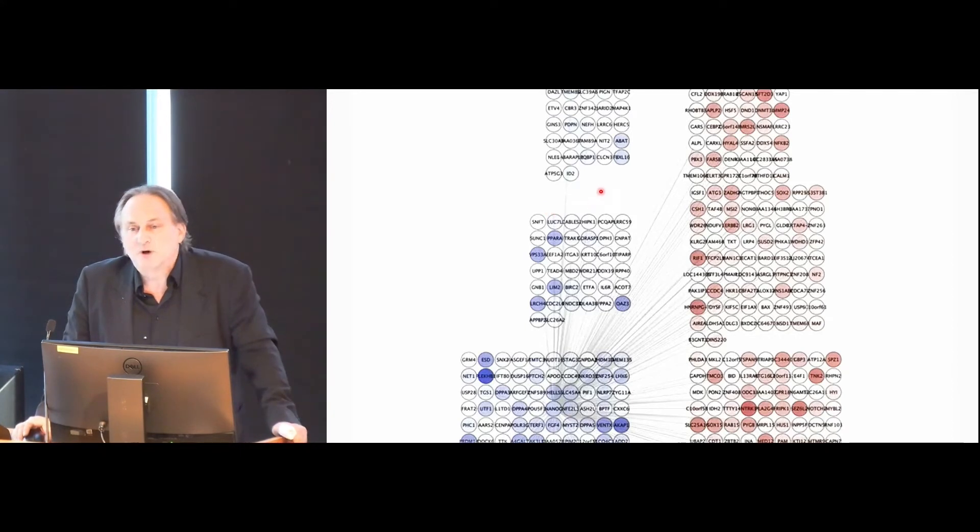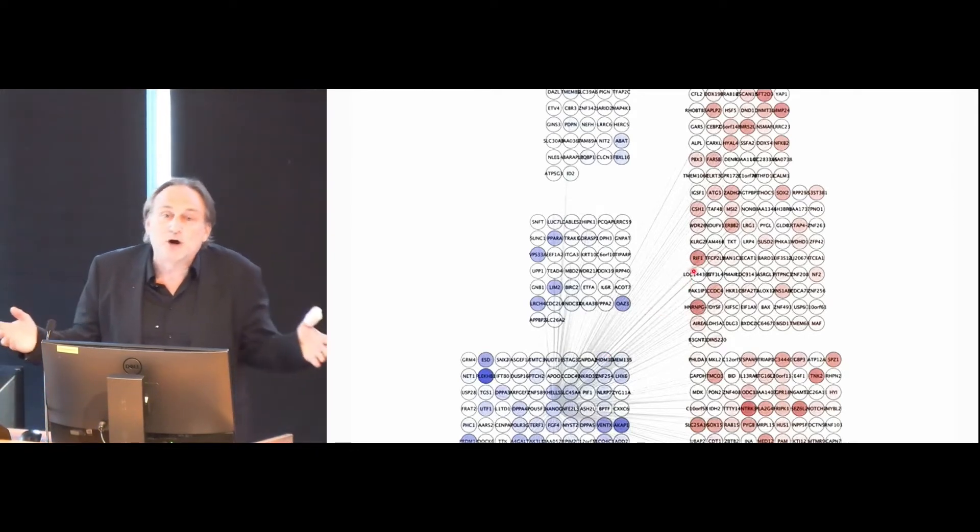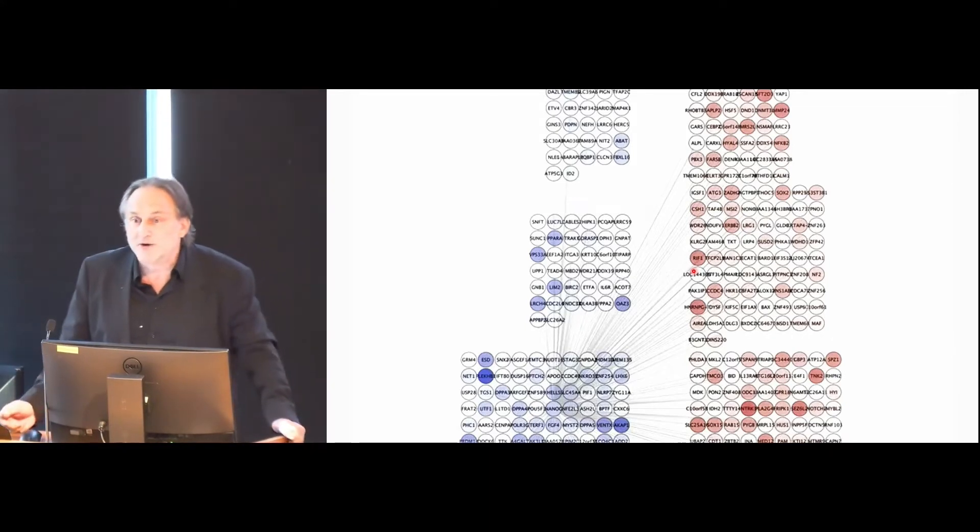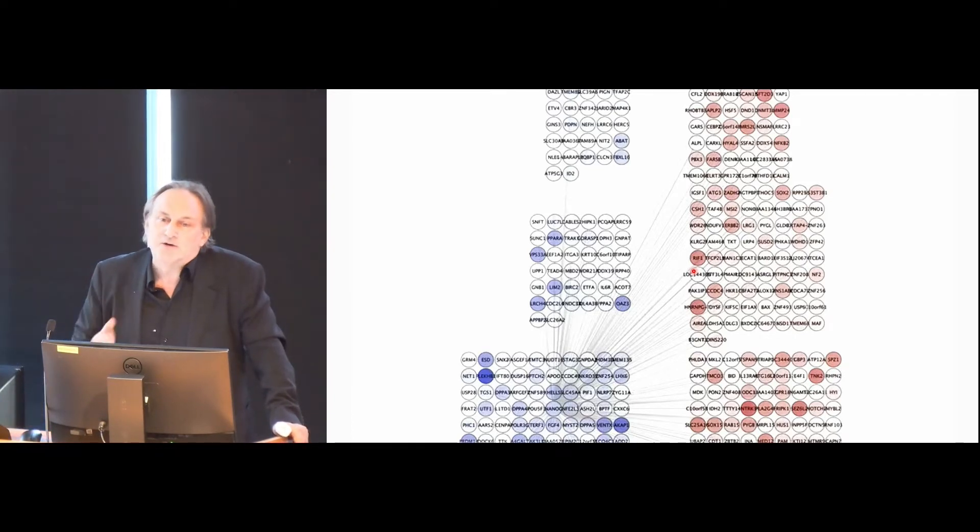Once you build these networks, which we can now do extremely effectively—many people think that I'm a computational biologist, I'm actually not. Half of my lab is experimental, half of my lab is computational because you've got to put your money where your mouth is. We basically validate these predictions. We go to the lab and we've shown in maybe more than 100 papers at this point that about 70 to 80 percent of the interactions that we predict using information theory are actually experimentally validated.